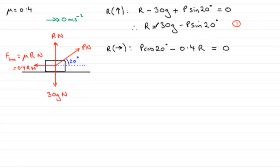Now we know what R is, so we can substitute R into this equation here. So if we call this equation 2, we can say sub equation 1 into equation 2. And if we do that, we've got that therefore, P cos 20 degrees minus 0.4 multiplied by R, 30g minus P sine 20 degrees, equals 0.